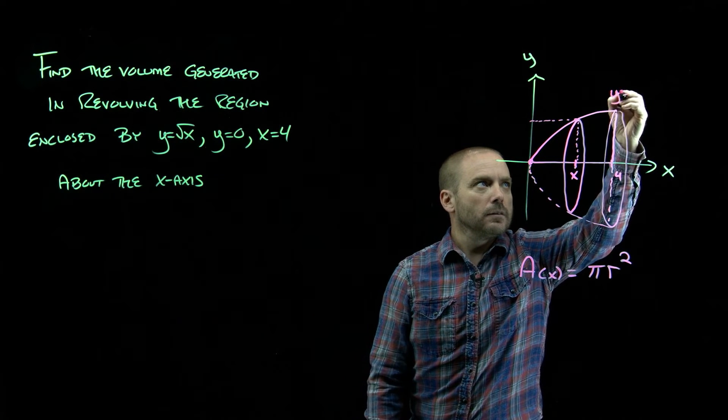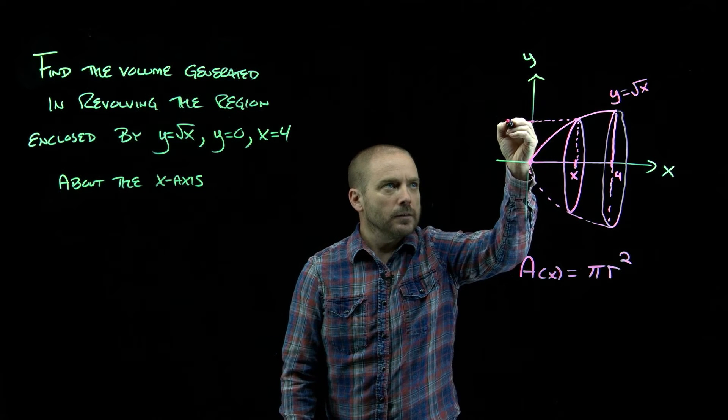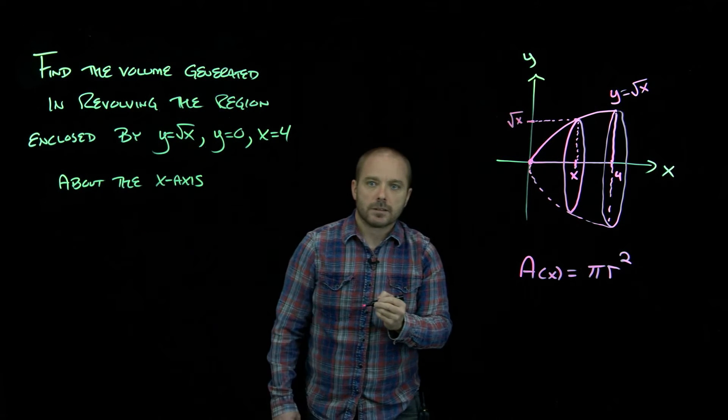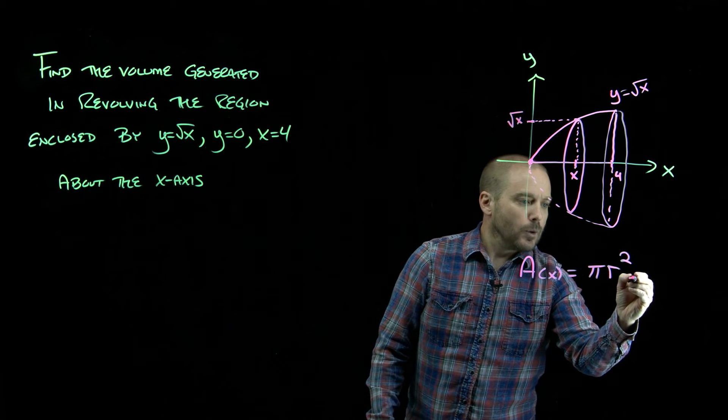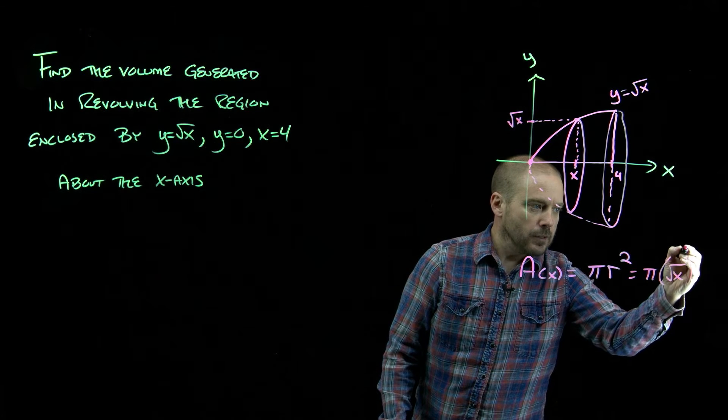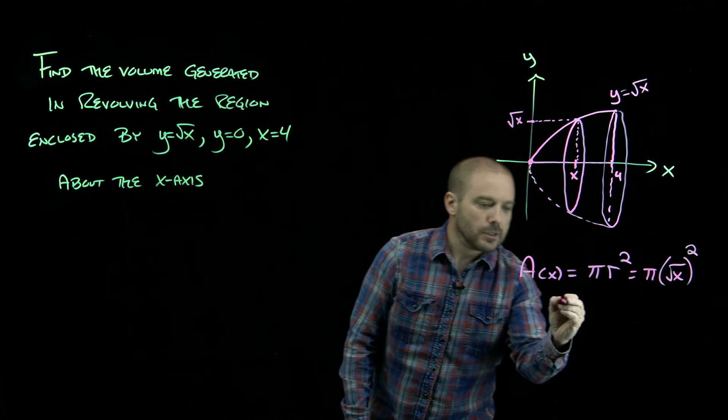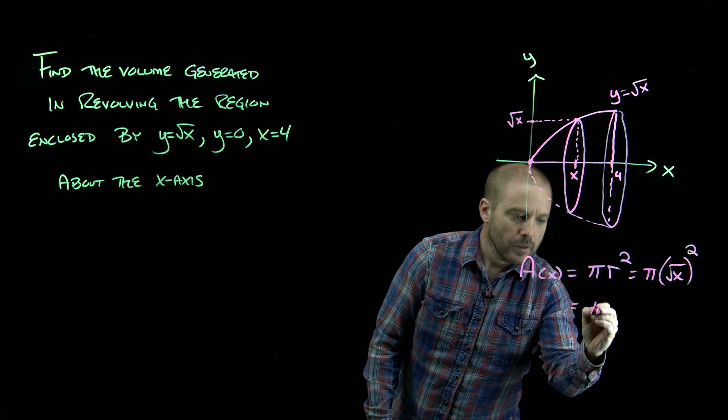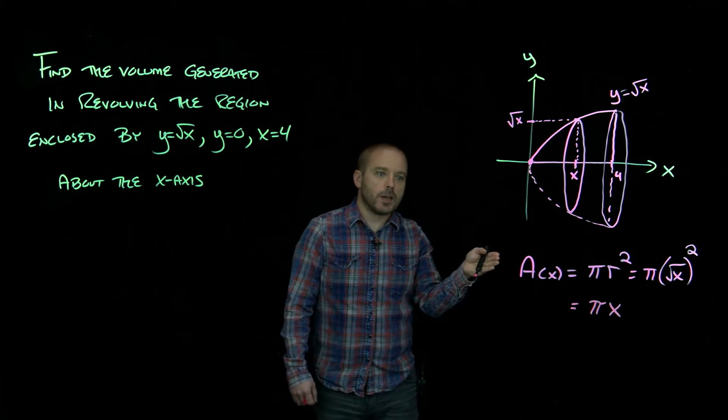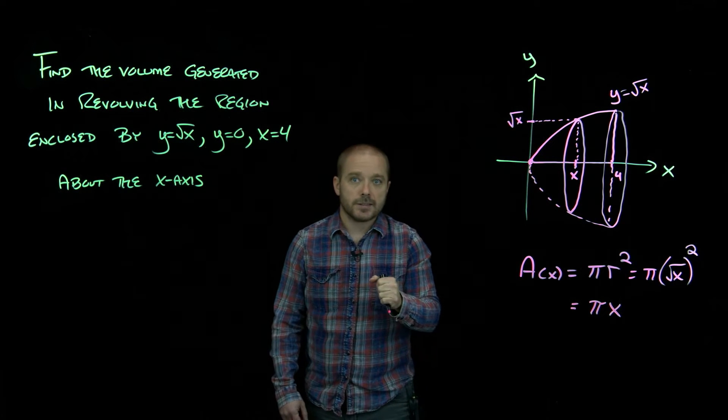This function is y equals square root of x, so the y here is square root of x. So we have pi square root of x squared. And that squaring would just get rid of our square root. So at any given x location then, the cross-sectional area is just pi times x.